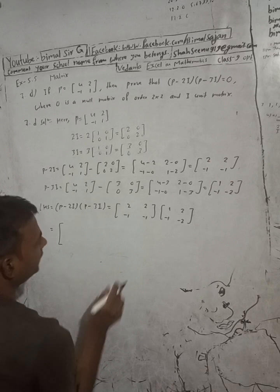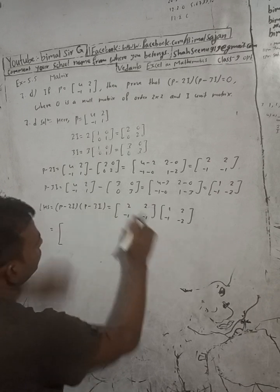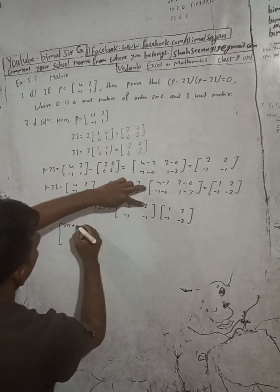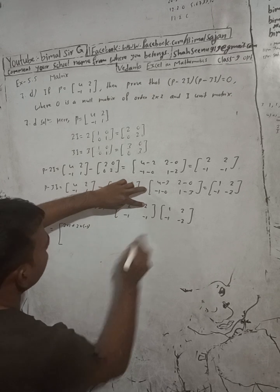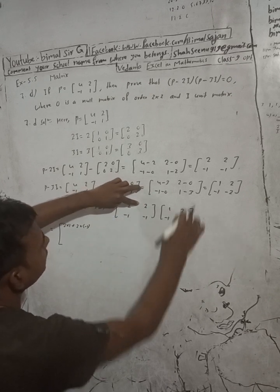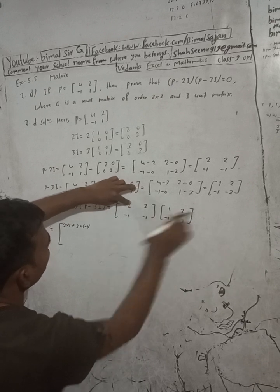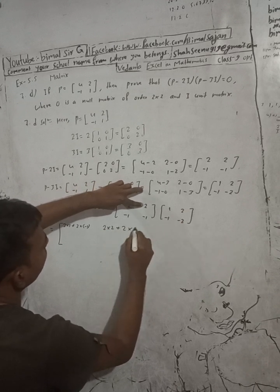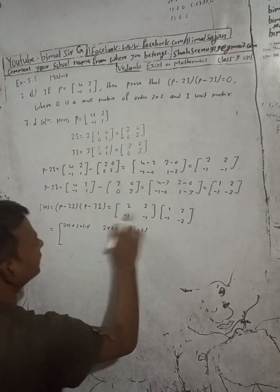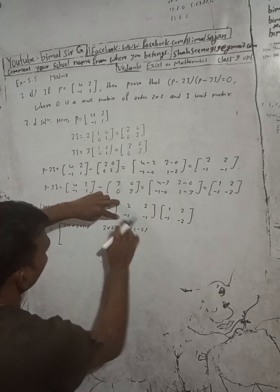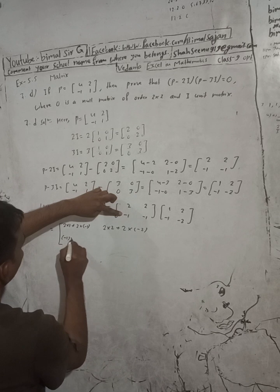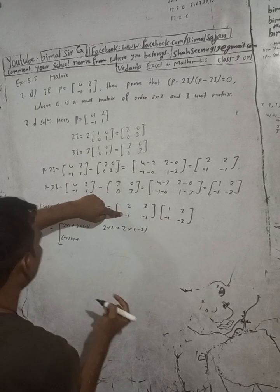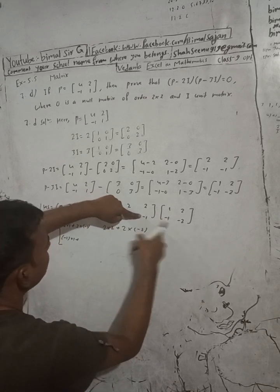What is the process? Multiply this row with this column. So 2 into 1 plus 2 into minus 1. Then this row and second column: 2 into 2 plus 2 into minus 2. Now the second row and first column: minus 1 into 1 plus minus 1 into minus 1.